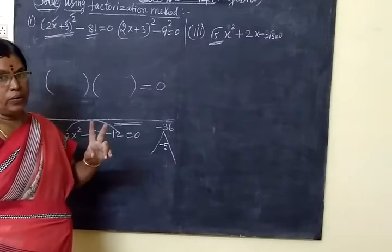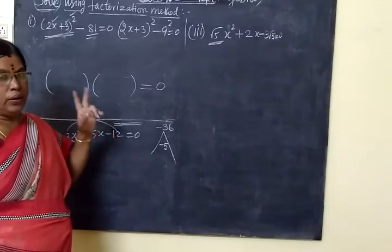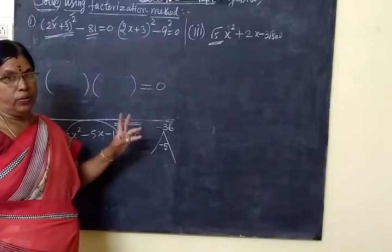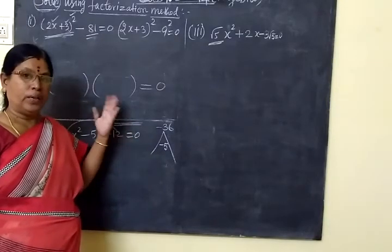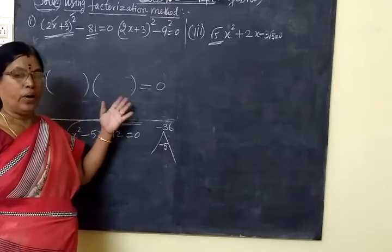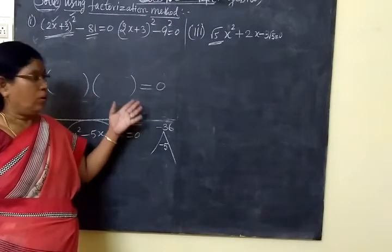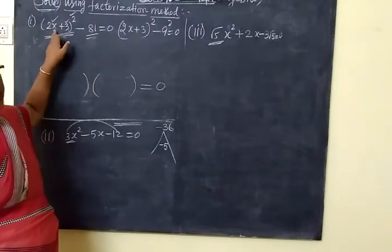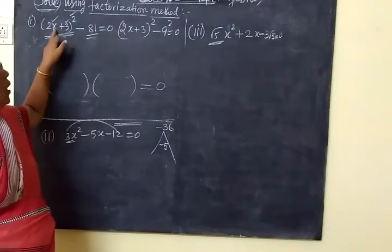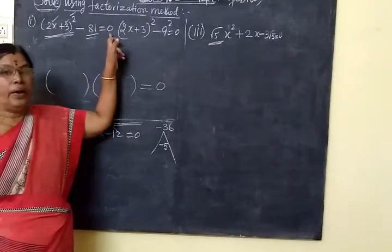Solve means equal to 0, then find the x value. X values we are getting 2 values. Solve a quadratic power 2 values. That's why we are getting 2 values. And the value is the x value.